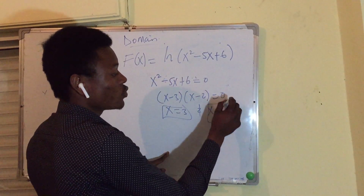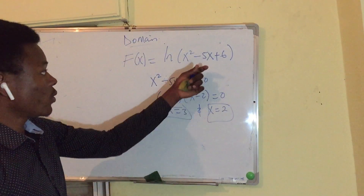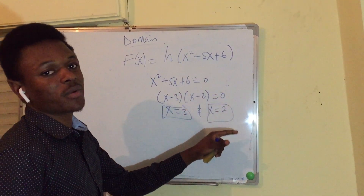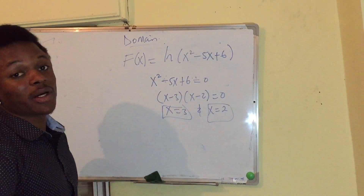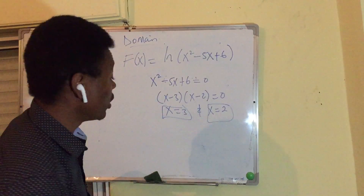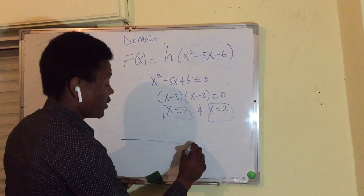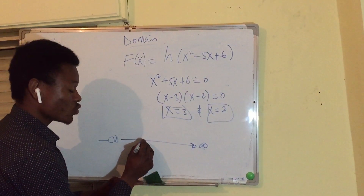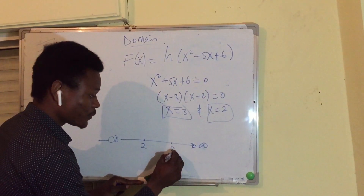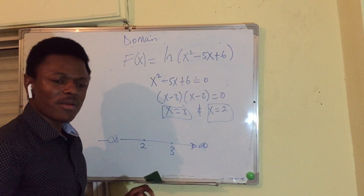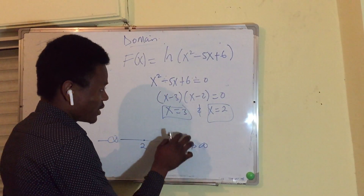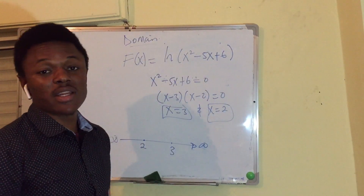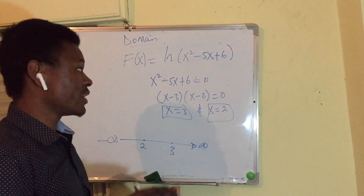At these points, the expression equals zero. We need to avoid those points where the value is zero or negative, so we are going to test the sign in each interval. We have three intervals separated by x = 2 and x = 3.